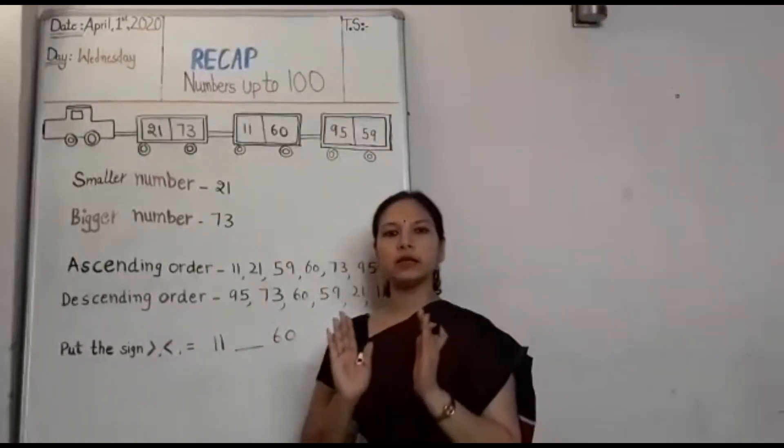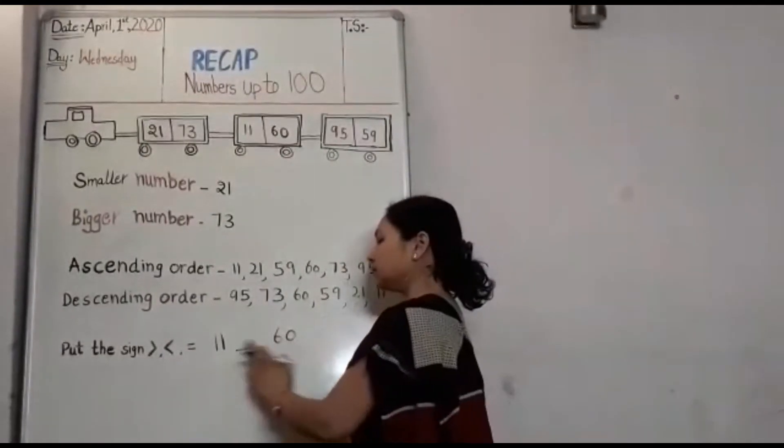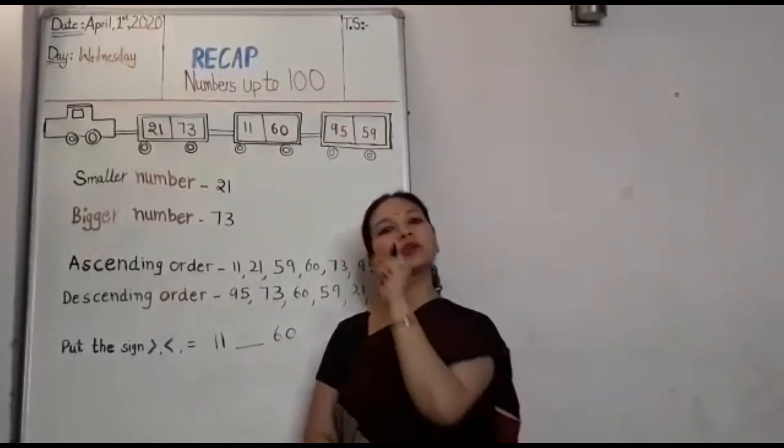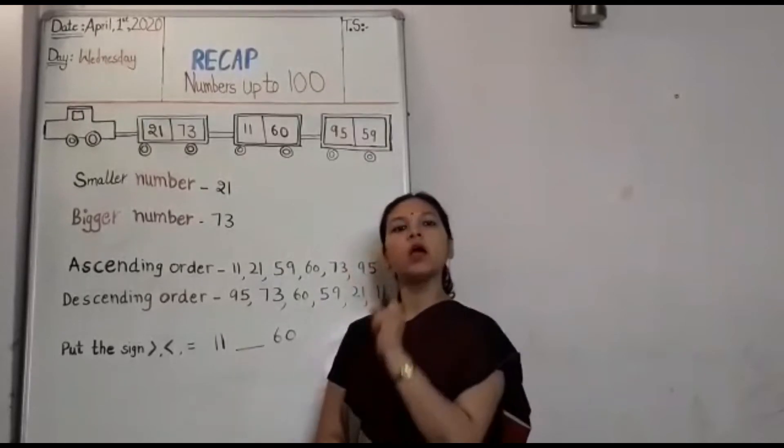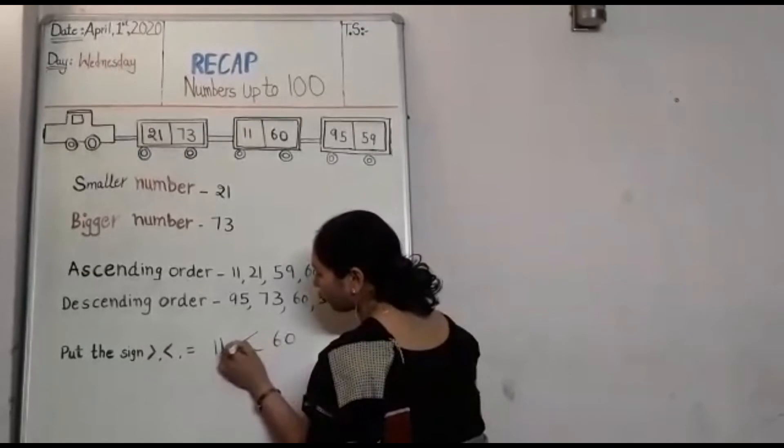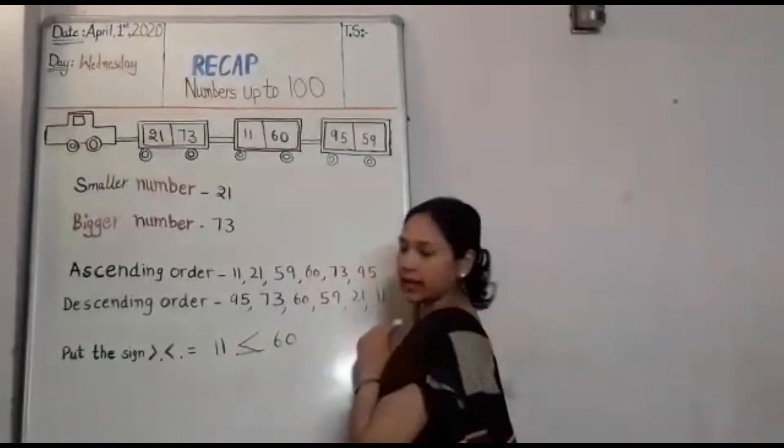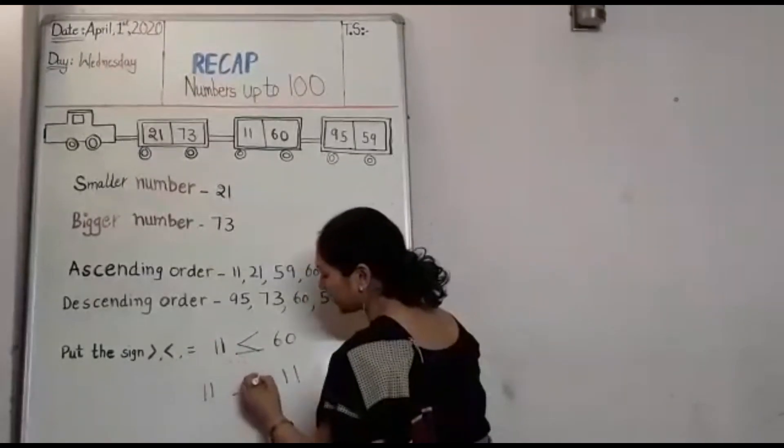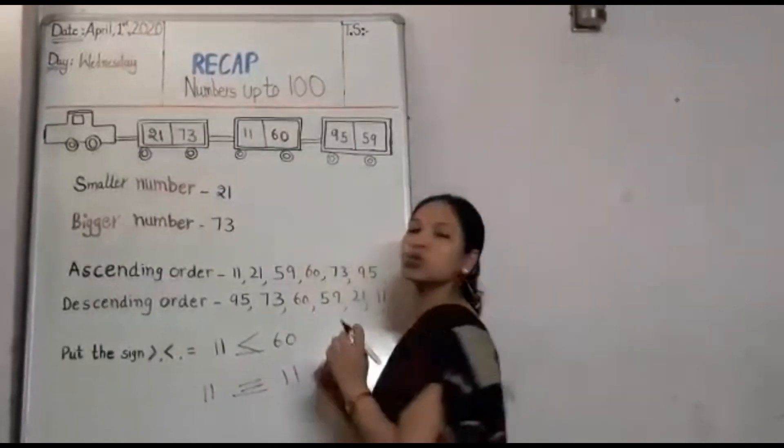Hamara jo sign hai, jab hum dono ko compare karte hain aur dekhte hain sabse bada number, wahan pe jo sign lagta hai, jaise crocodile ka mouth open hota hai, usi shape mein biggest number ki taraf crocodile ki tarah mouth khulta hai. Jab do numbers same hote hain to hamara kaun sa sign aata hai? Equal to ka sign.